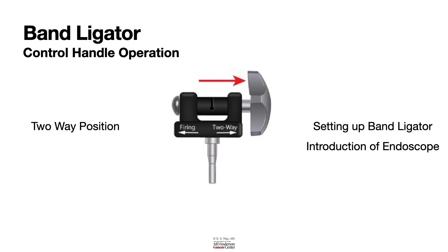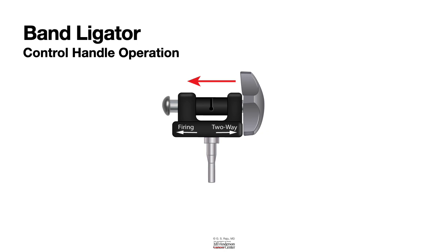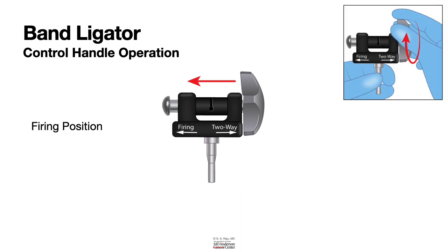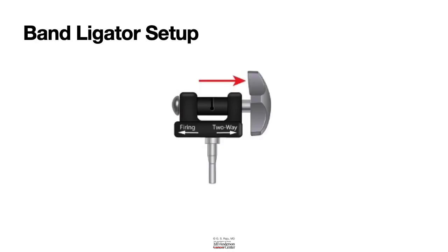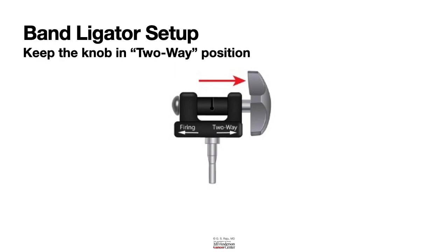If you press the head of the band ligator against the control handle, it goes into firing position. In firing position, it only moves in the clockwise direction, allowing the bands to be deployed. The key point: when setting up the band ligator, keep the knob in the two-way position. This allows loading of the device. It is important to understand the concept of two-way position versus firing position.